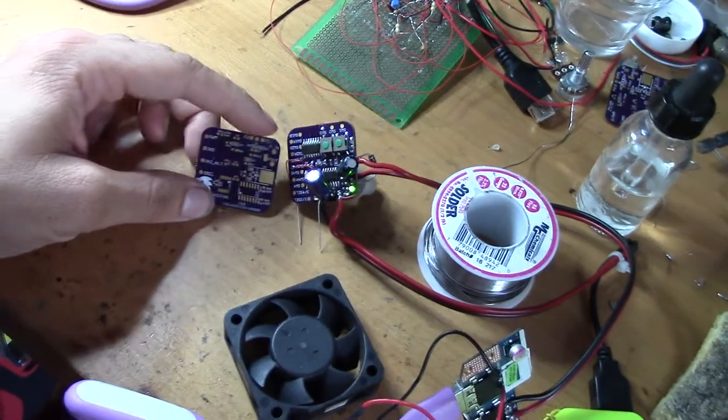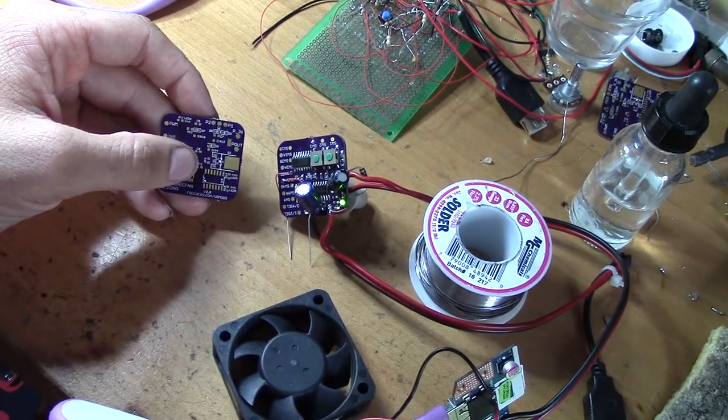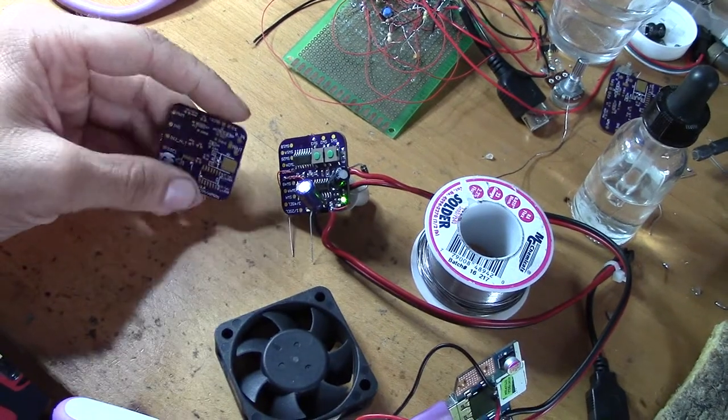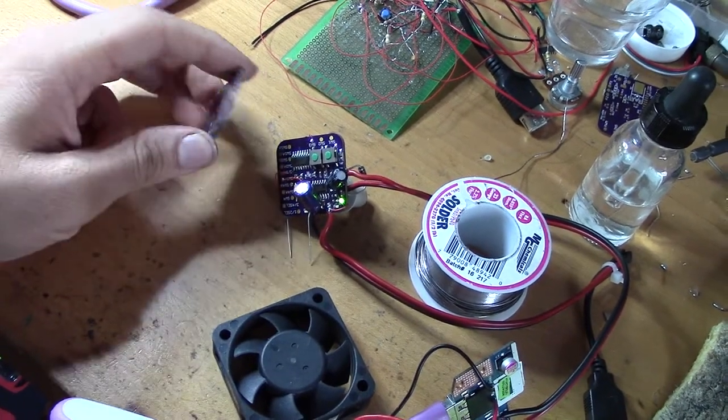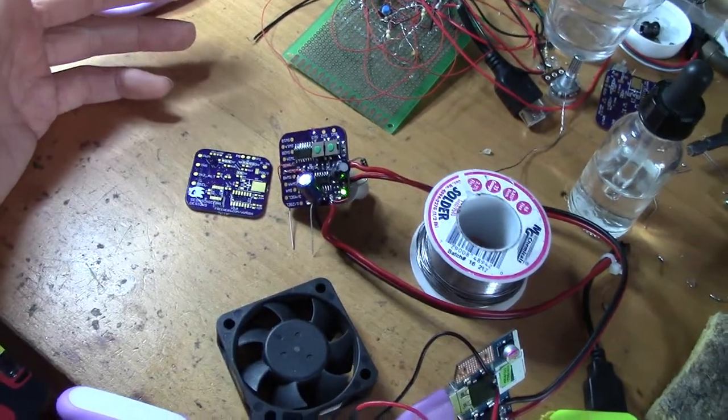Finally, there is both an astable multivibrator for a clock pulse if you need that for anything, as well as a PWM pulse width modulation output which can be used to adjust the speed of motors and the dimming of lights.